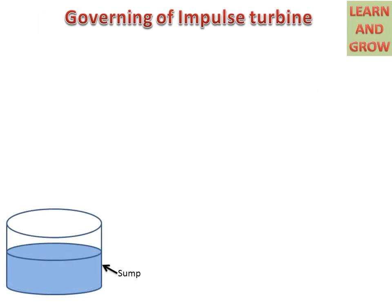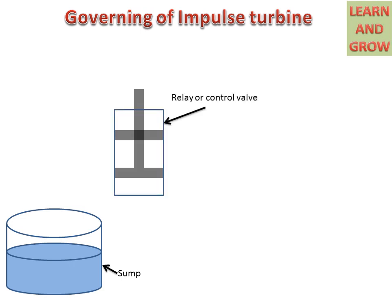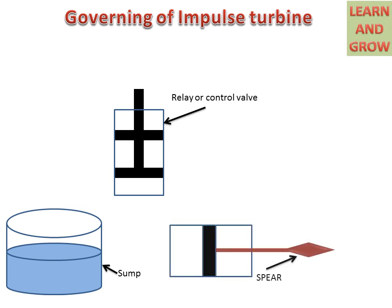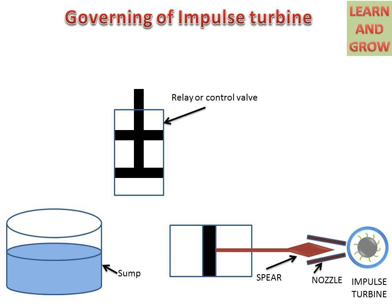We have an oil sump in which we have oil, a relay or control valve with piston and piston rod, a cylinder with a piston connected to spear, impulse turbine and nozzle.